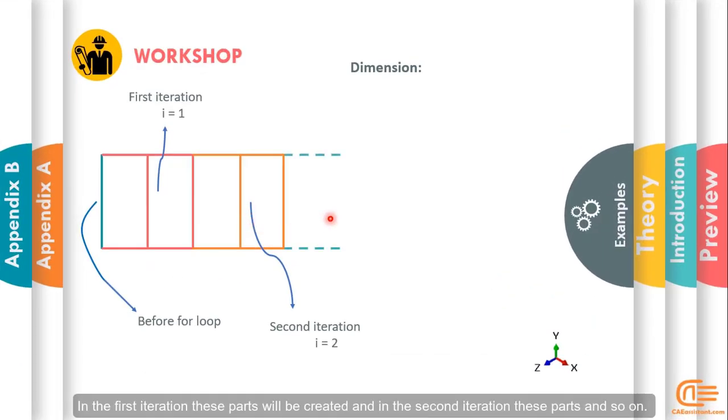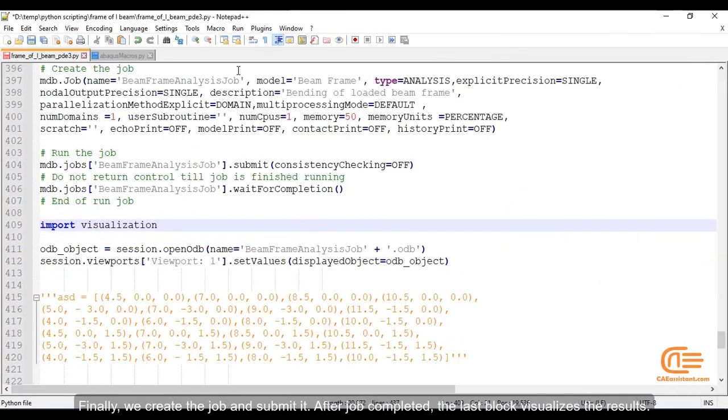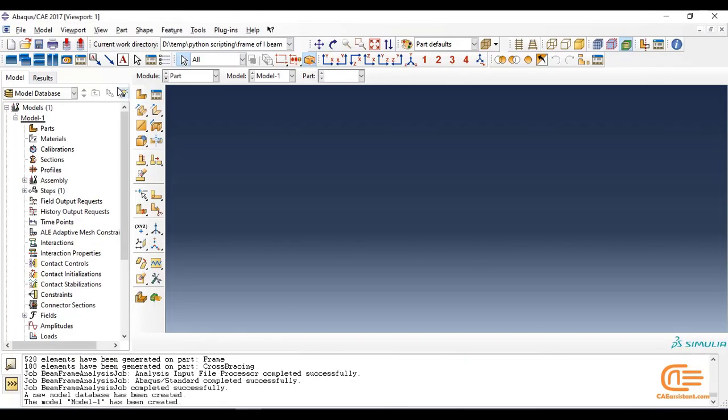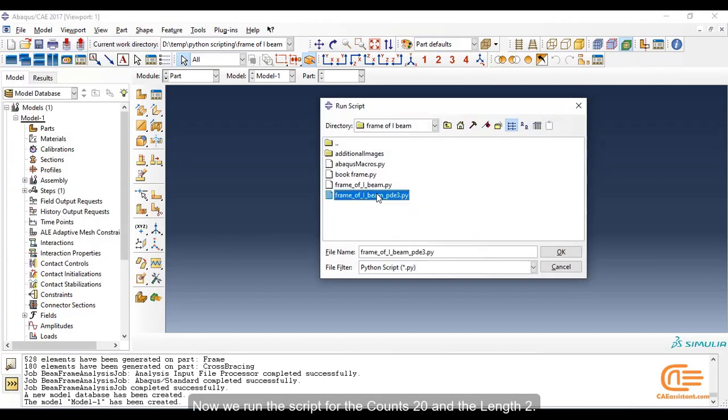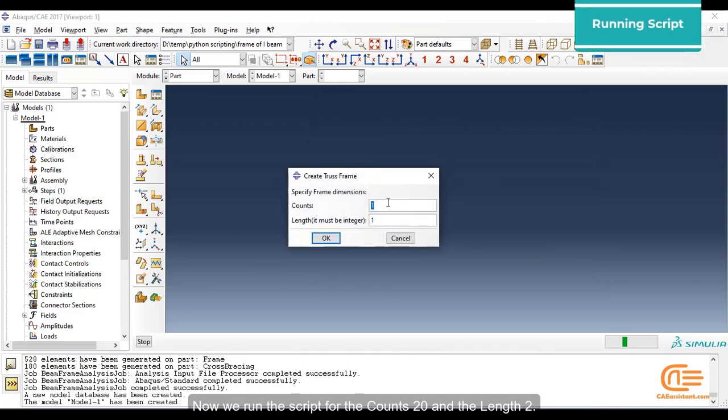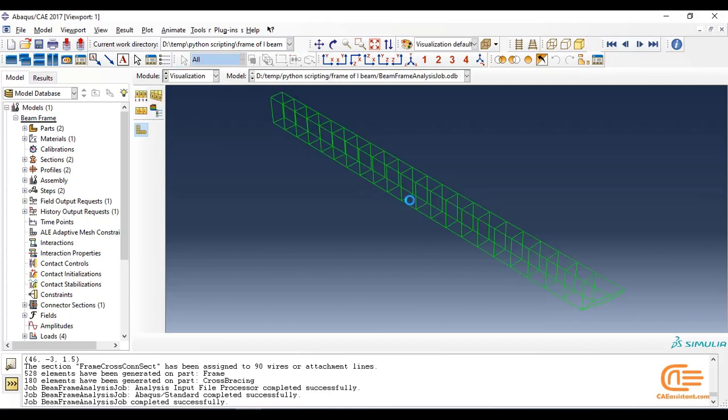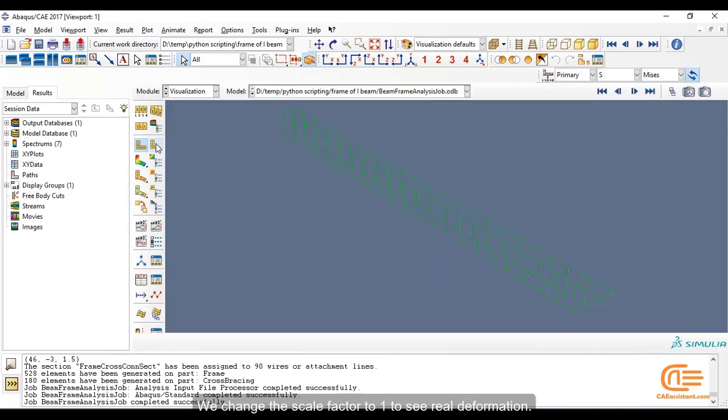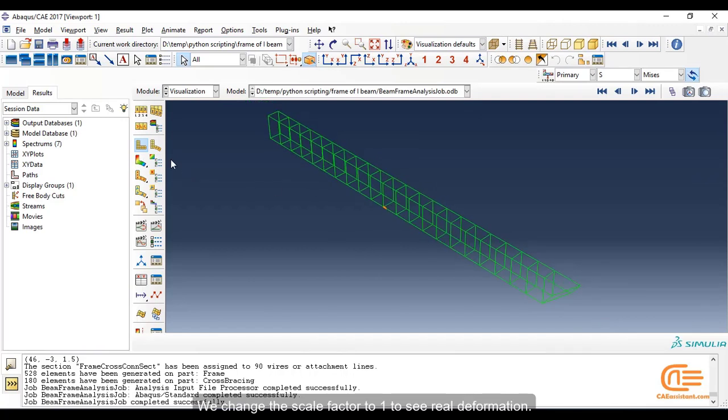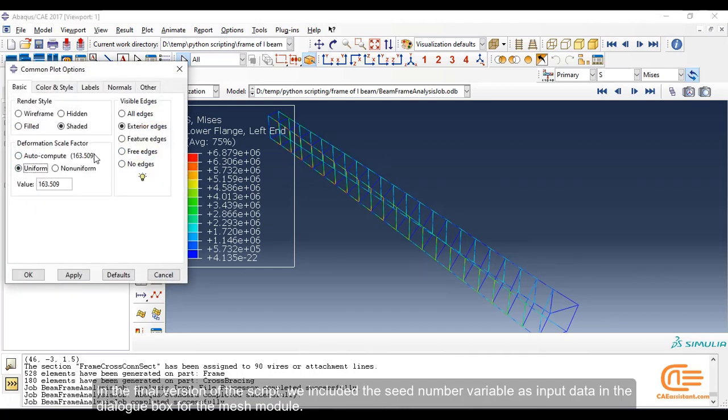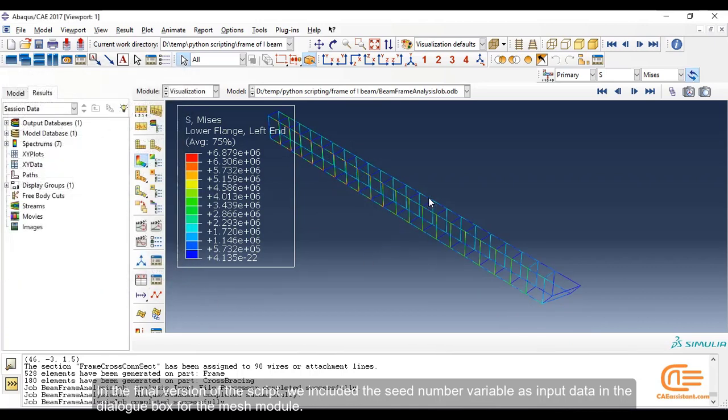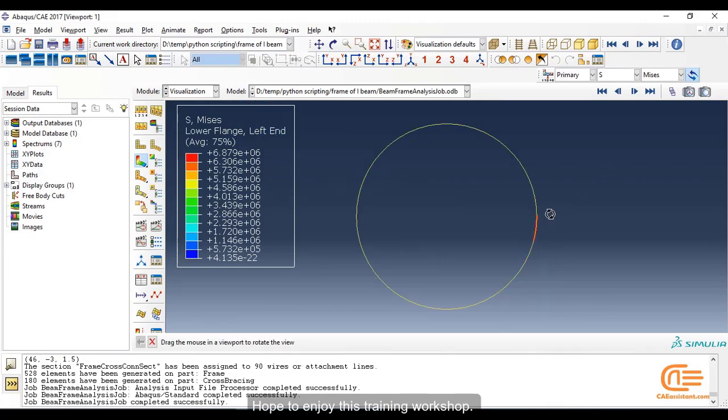In the first iteration, these parts will be created, and in the second iteration, these parts, and so on. Now we run the script for counts 20 and length 2. We change the scale factor to 1 to see real deformation. In the final version of the script, we included the seed number variable as input data in the dialog box for the mesh module. Hope you enjoy this training workshop!